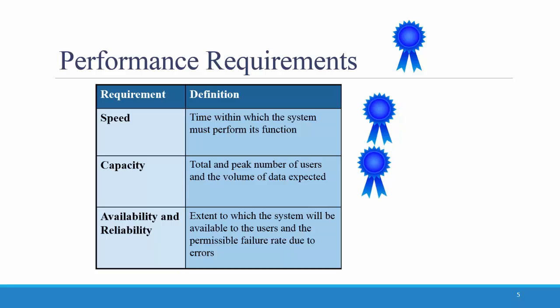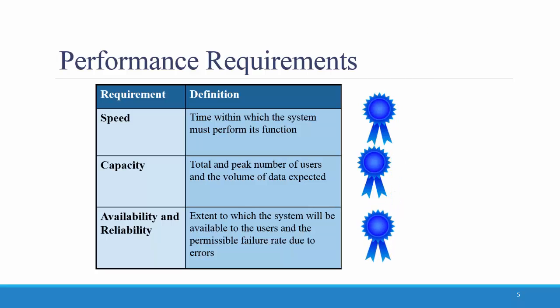Finally, availability and reliability involves the extent to which the system will be available to the users and the permissible failure rate due to errors. An example of this requirement could be: Our system should have 99% uptime performance.